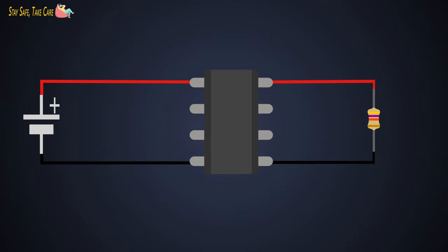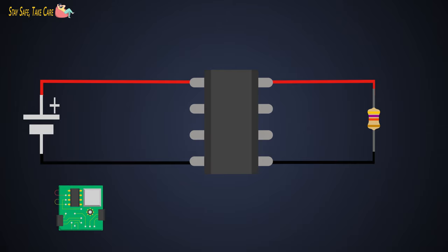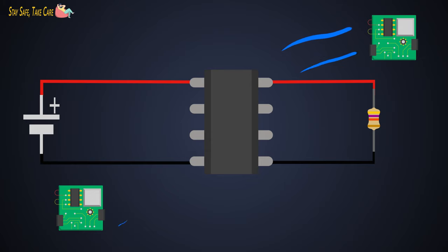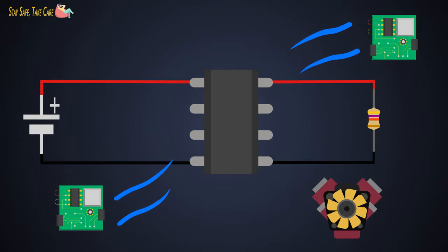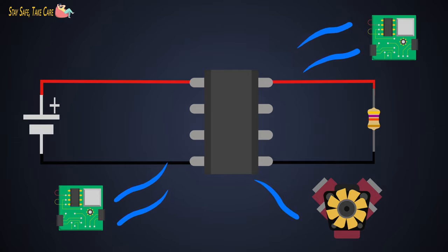So far we have considered only the electronic system itself, but in the real world there are many other devices operating simultaneously. Electrical noise is also radiated from magnetically induced currents from other systems, from nearby mechanical vibrations, and many other factors. This noise can be very devastating for digital ICs.